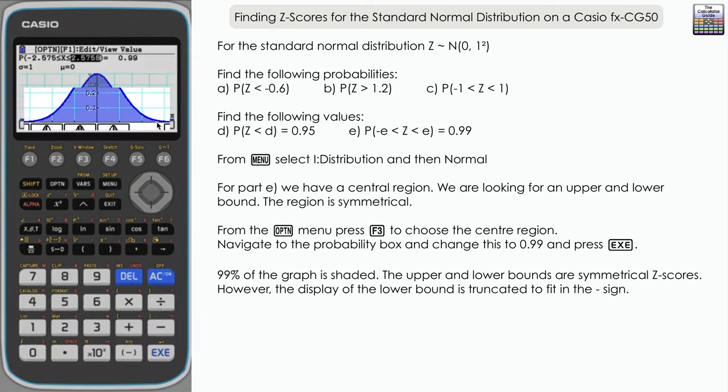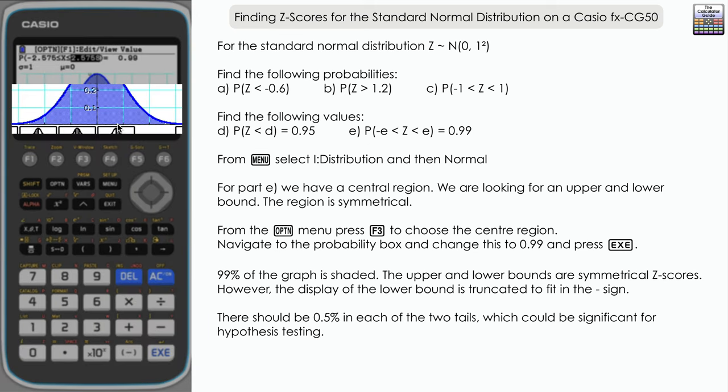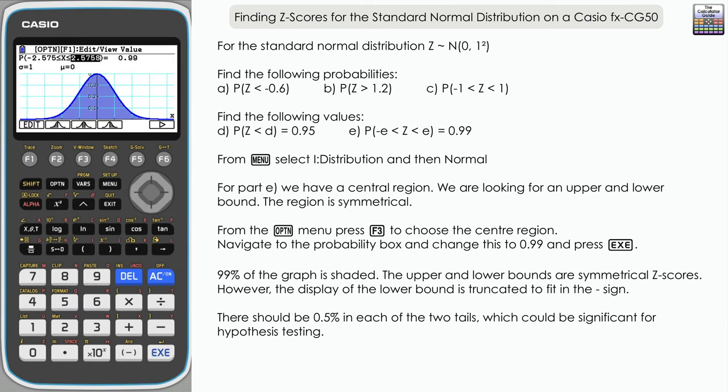And if we look very closely, we can see that there's tiny little unshaded regions both in the lower tail and the upper tail. Together they represent the missing 1%, so separately there's 0.5% of all values in those regions. So 0.5% in the upper tail, 0.5% in the lower tail, and again that could be useful to you if you're answering questions with regards to hypothesis testing.